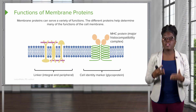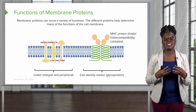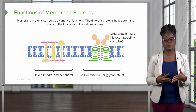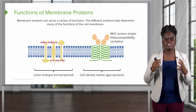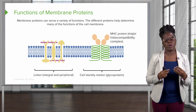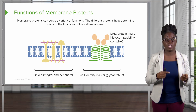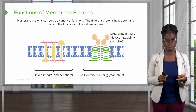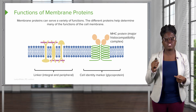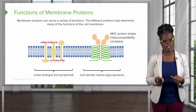Another function of the membrane proteins is cell identity markers. Everybody has cell identity markers on their cells. This is how our body knows that my cells belong to me and your cells belong to you — they're as unique to you as your fingerprints are.